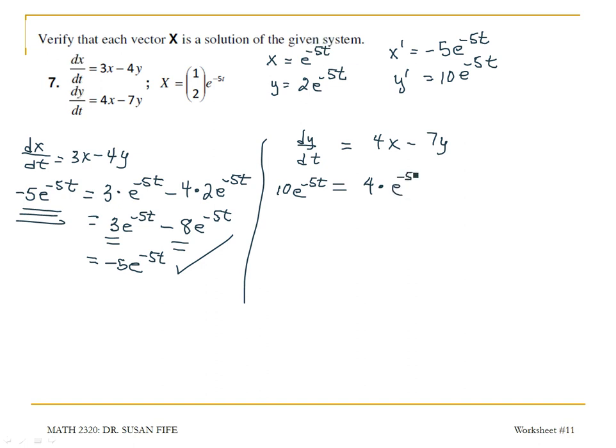minus 7 times y, or 7 times 2e to the negative 5t. Simplifying the right side, I have 4e to the negative 5t minus 14e to the negative 5t, which gives negative 10e to the negative 5t.